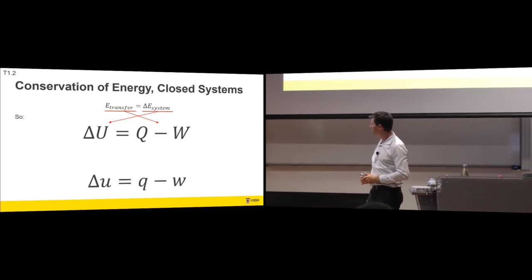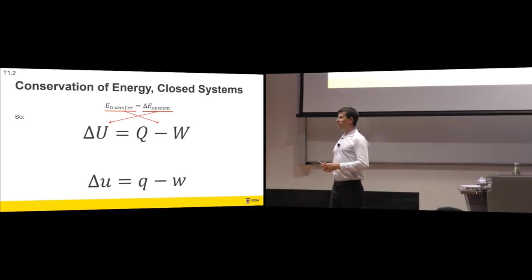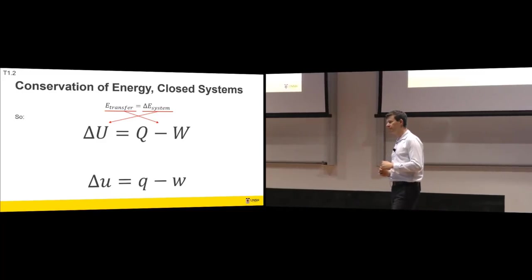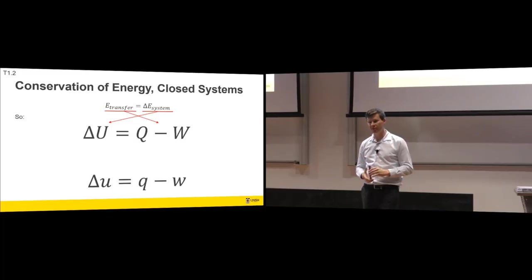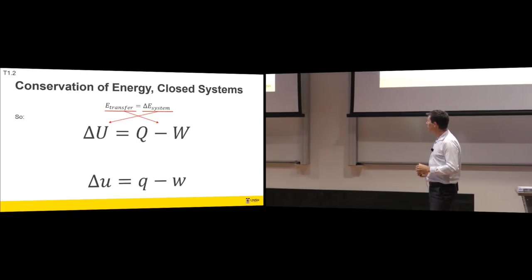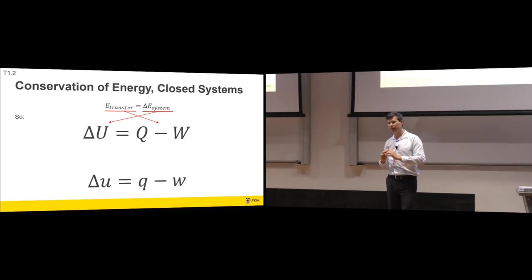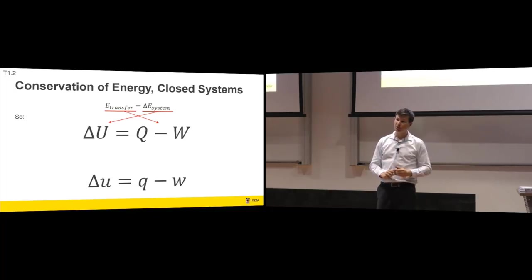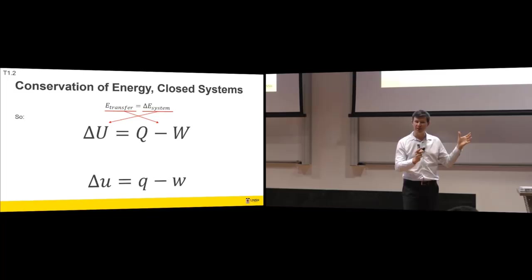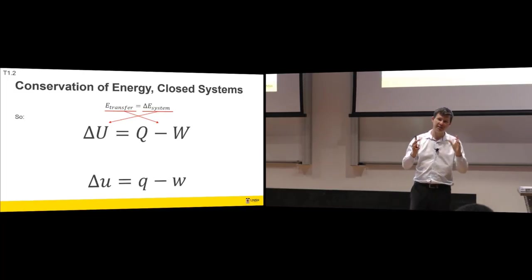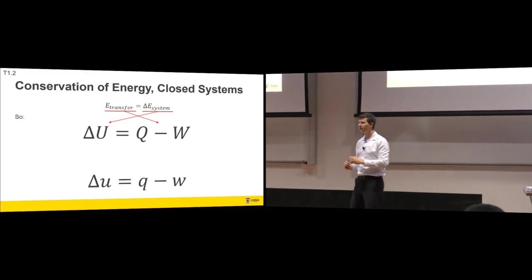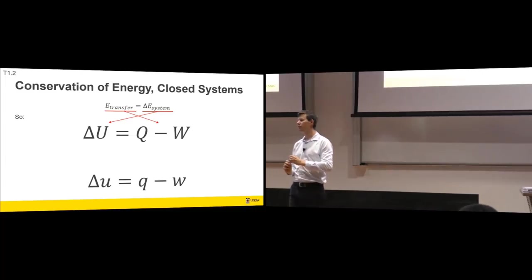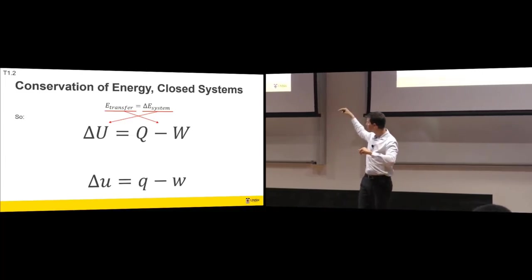That can be on a specific basis as well. So if you divide both sides by mass, at the top we're talking about the energy of the total system, at the bottom we're talking about on a specific basis. So therefore, energy transfer equals Q minus W and delta energy of the system is delta U. And you often see delta U equals Q minus W. This is what we would say if someone said write out the first law of thermodynamics for a closed system.